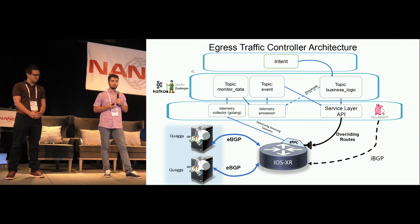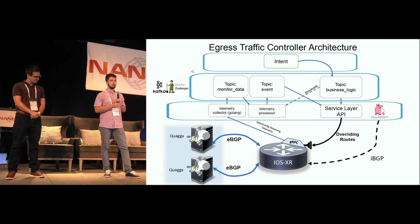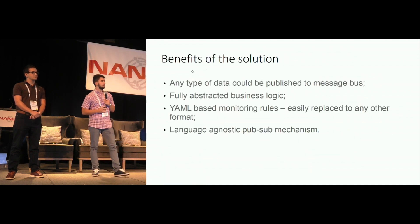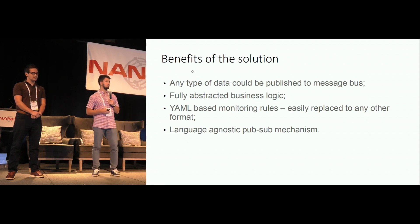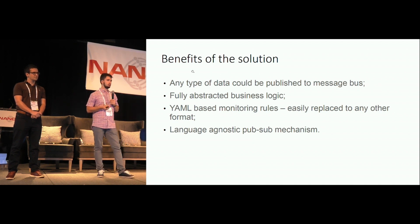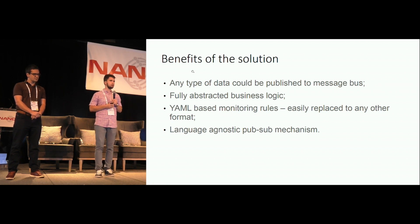It's the IOS XR API to program your RIB — and not only the RIB. My colleague Akshat Sharma will be covering a full session on Wednesday, so you can check the details later this week. Any type of data can be published to the message bus — whether it's telemetry, SNMP, or syslog messages. Our logic doesn't depend on other layers, and we used YAML format, but we can easily replace it with JSON or provide an API for it.